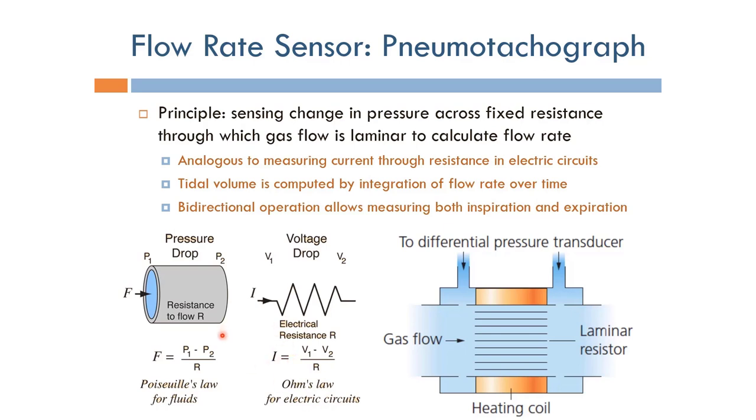This is exactly equivalent to having a pipe like this, with a pressure drop of P1 minus P2 and a known flow resistance of R. When we know R, when we construct a sensor with a known laminar resistance, we can compute the flow as the difference between the two pressures.